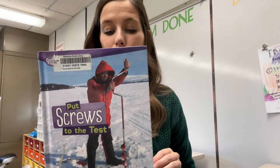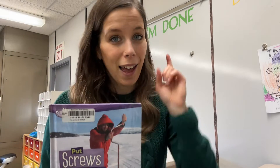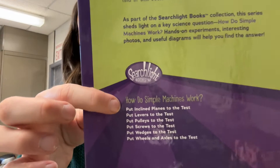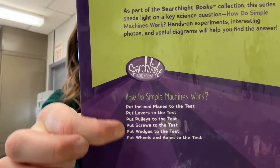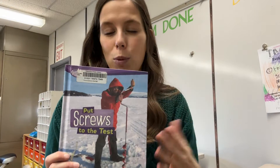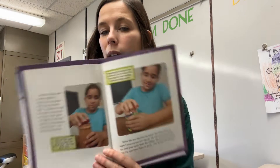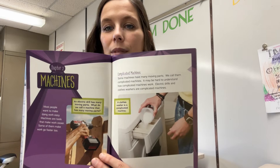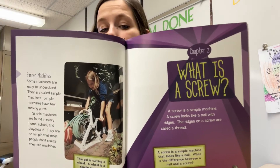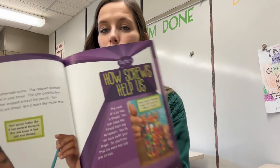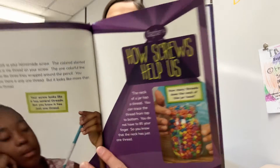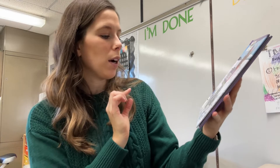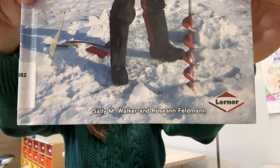The last recommended book is Put Screws to the Test, and yes, this is part of a series: Put Inclined Planes to the Test, Put Levers to the Test, Put Pulleys to the Test. I just grabbed one to see how the book looked. It's a little bit more text but not too crazy — grade three kids should be able to read it or at least reference it. It gives a good introduction to screws, talking about jar lids and things like that. Put Screws to the Test is by Sally M. Walker and Roseanne Feldman.